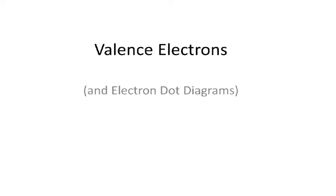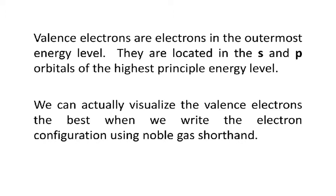Tonight's lesson is on valence electrons, which basically are the outside. The valence electrons are electrons in the outermost energy level. They're located in the S and P orbitals of the highest principal energy level. That's very important to note. When we start going through these electron configurations, you're going to notice that it does stop in S and P. We can actually visualize the valence electrons best when we write the electron configuration using noble gas shorthand, because we're just really writing the last stuff. We're not worried about all the inside electrons.